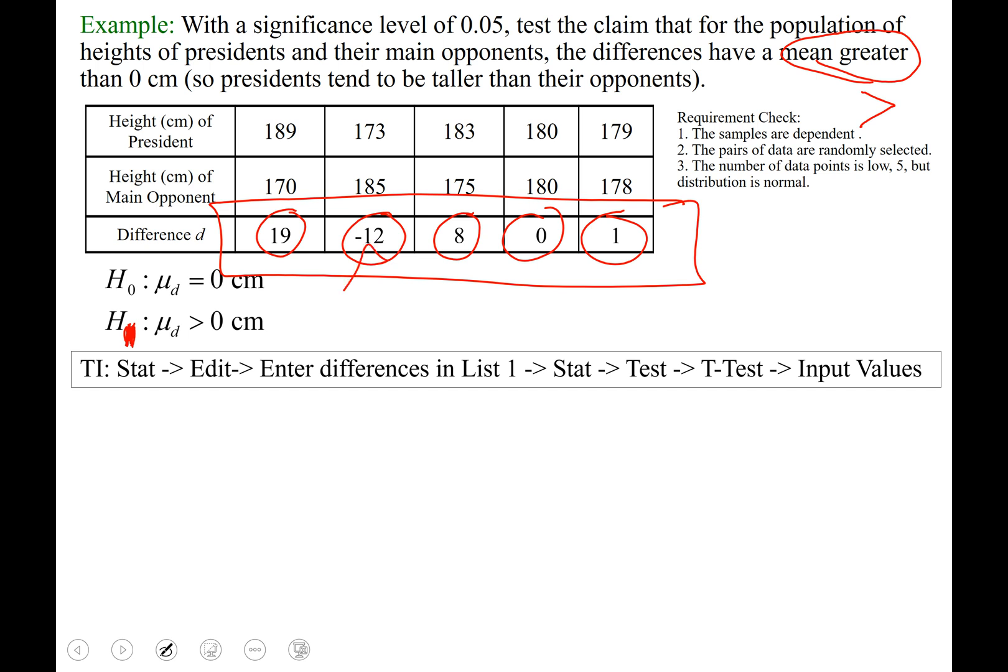When you type in the negative 12, some of your calculators will say it's an error if you put the minus sign for the negative. So make sure you use the actual negative sign, which looks like this key on your calculator. It's right below the 3. Then it's 8. Then it's 0. Then it's 1.